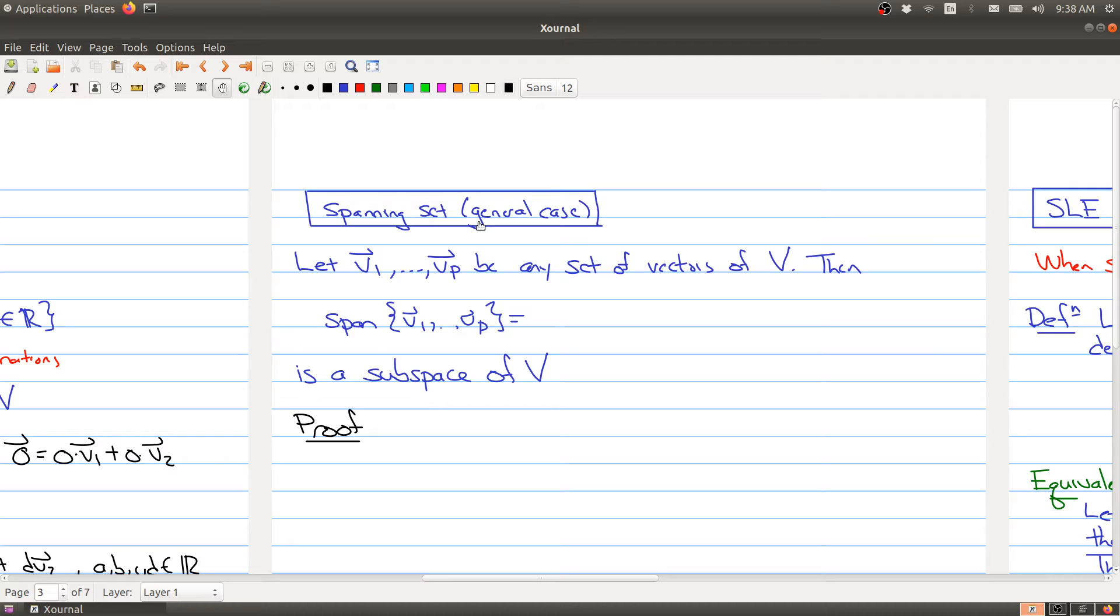If you take any vectors, any set of vectors in V, and you form the spanning set of that set of vectors, that is all the linear combinations of these vectors. So C1 V1, C2 V2, up to Cp Vp, where each of these Ci are in R. You get a subspace of your original vector space V.